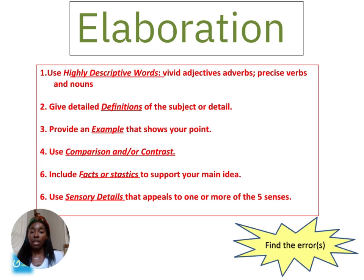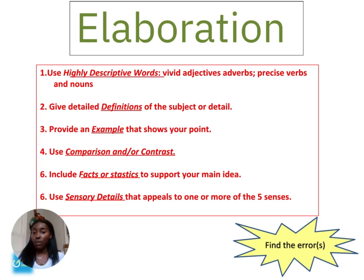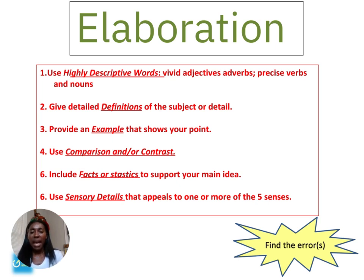Give detailed definitions about your subject. Provide examples. Use compare and contrast — how is what you're writing about similar to or different from something else? Include facts or statistics, because people like learning. And if all else fails, think about sensory details: how can you write about how something looks, smells, sounds, tastes, and feels? That is how you elaborate when writing.